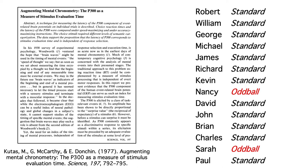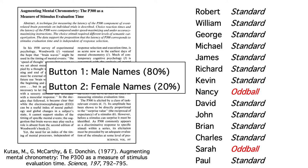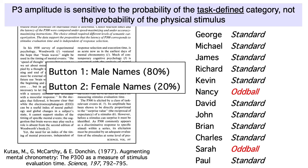Each individual name only appeared once for a given subject. In the key condition, subjects were asked to press one button for male names and a different button for female names. Because 80% of the stimuli were male names and 20% were female names, the male names were standards and the female names were oddballs. So even though any individual name only appeared once per subject, the category of female names was rare and the category of male names was frequent. Recall that it's the probability of the task-defined category that matters for the P3, not the probability of the physical stimulus.